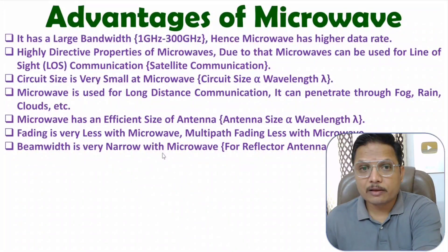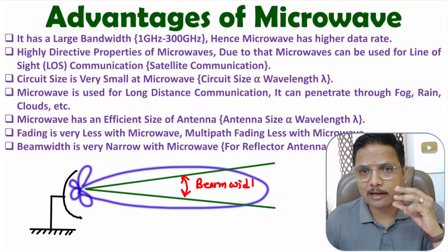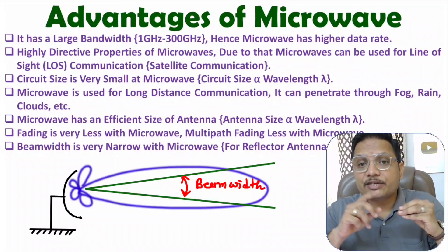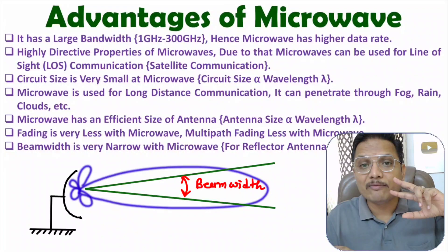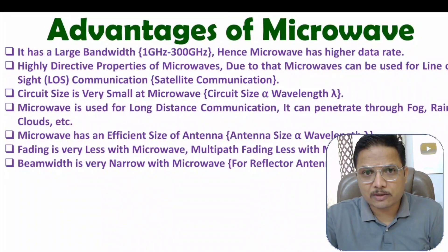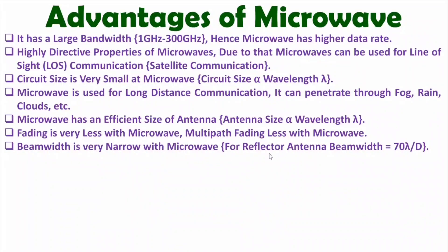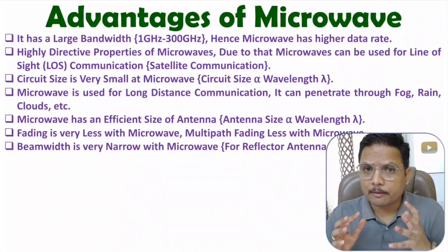The next advantage is based on beam width. Beam width is very narrow with microwave. Beam width is the major lobe width of the radiation pattern of an antenna. For a reflector antenna, beam width = 70 × λ / d, calculated in degrees. With microwave, wavelength λ is short, so beam width is also narrow. Because of this narrow beam width, one can transmit microwave signals over long distances, which is why microwave is widely used in satellite applications.